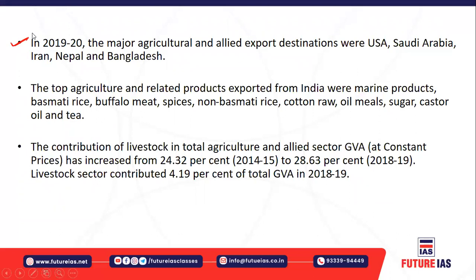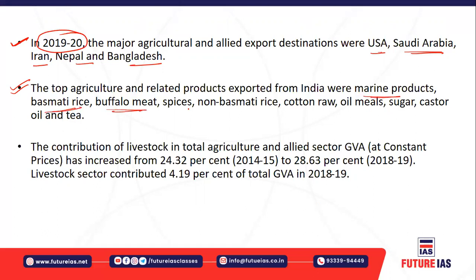The major export destinations for India's agriculture and allied sector in 2019-20 were USA, Saudi Arabia, Iran, Nepal, and Bangladesh. The items exported from India were mainly marine products, basmati rice, buffalo meat, spices, non-basmati rice, cotton raw, oil meals, sugar, castor oil, and tea. These were the major agricultural items as per the Economic Survey 2020-21.